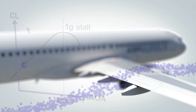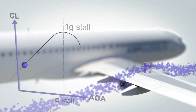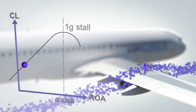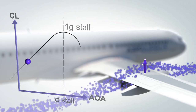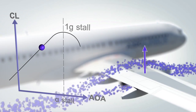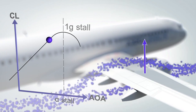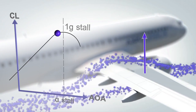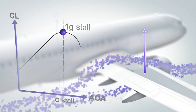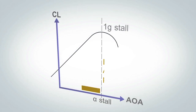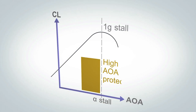As indicated on this illustration, when the angle of attack increases, the lift coefficient also increases, up to a maximum value that defines the angle of attack for the stall. The role of the high angle of attack protection is to prevent the angle of attack reaching this maximum value.